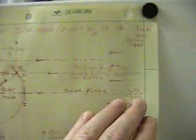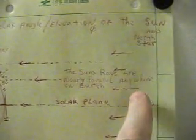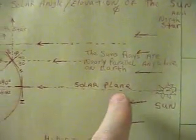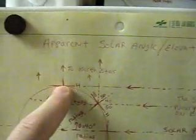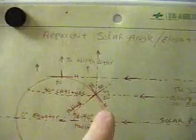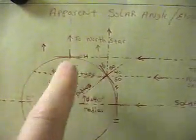First, the rays from the Sun—the Sun is so far away, all the rays are parallel. That's your solar plane here. And the North Star is so far away, all the rays come in parallel anywhere on Earth.